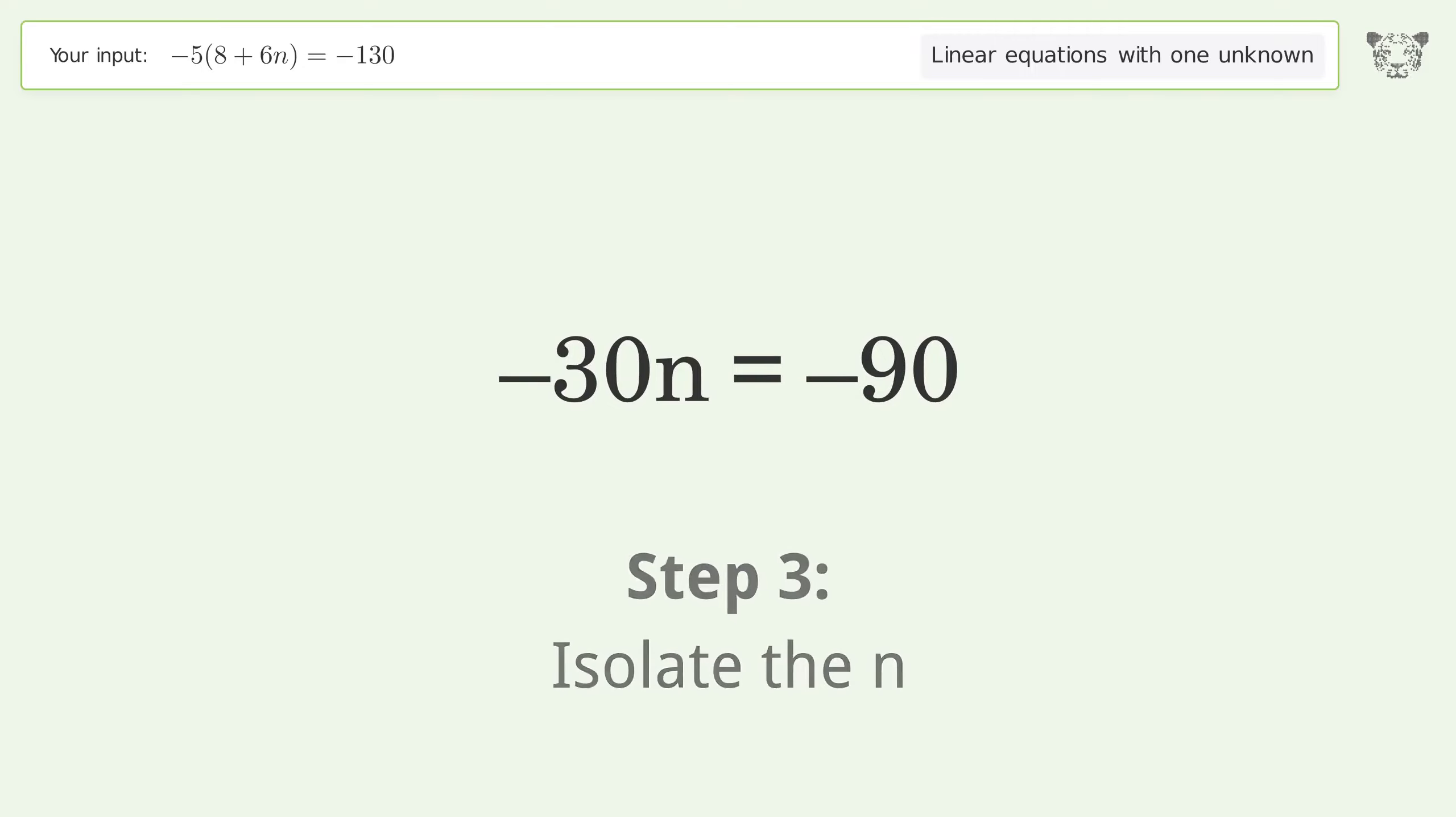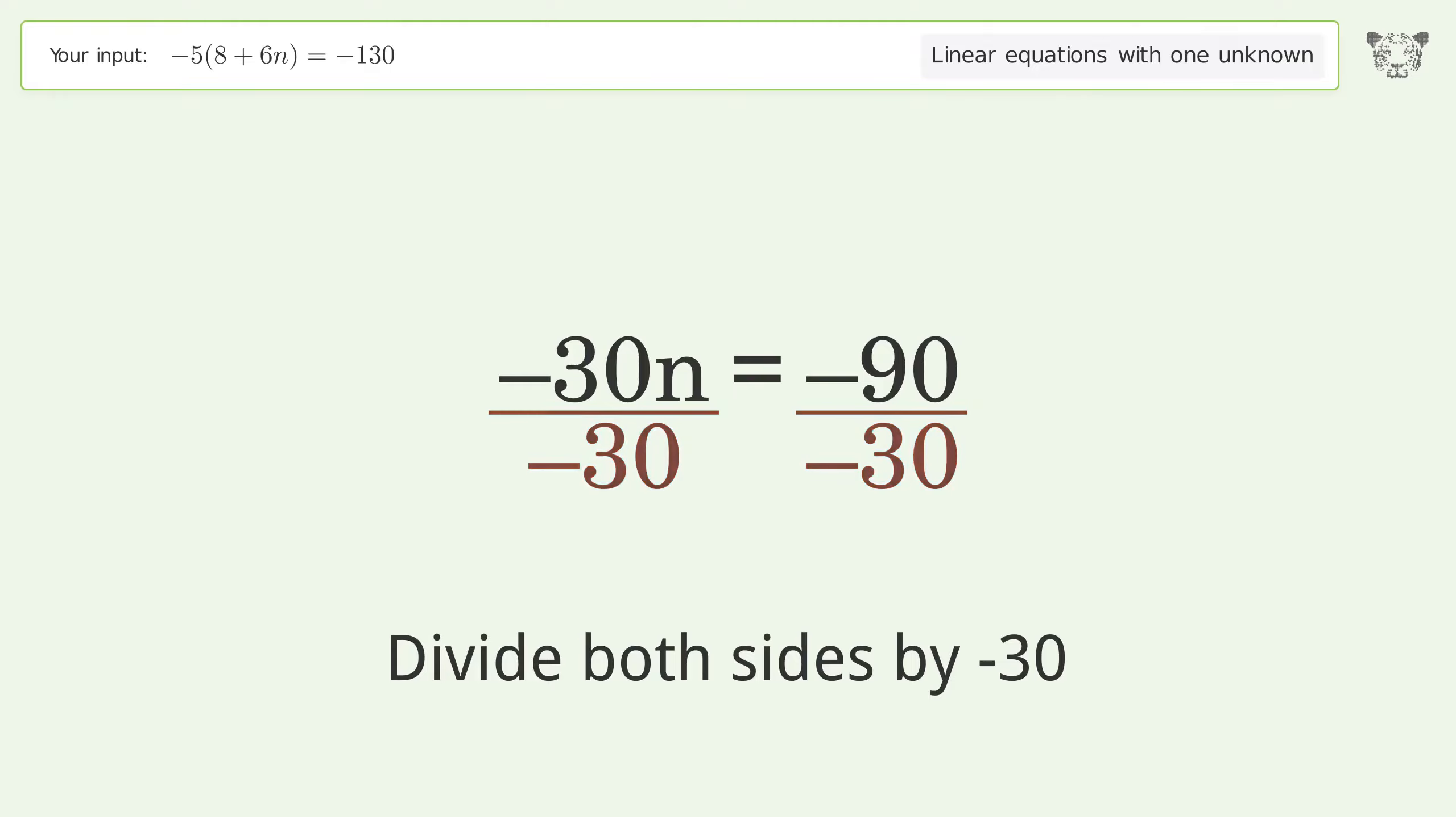Isolate the n. Divide both sides by negative 30. Cancel out the negatives.